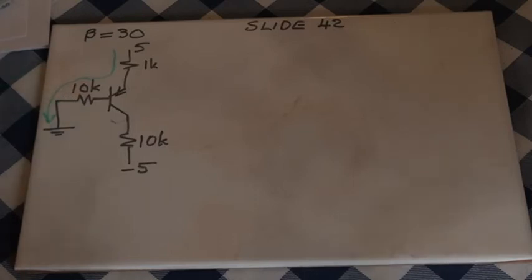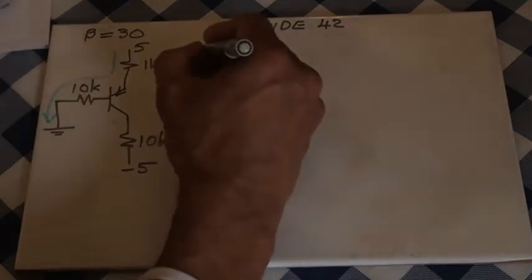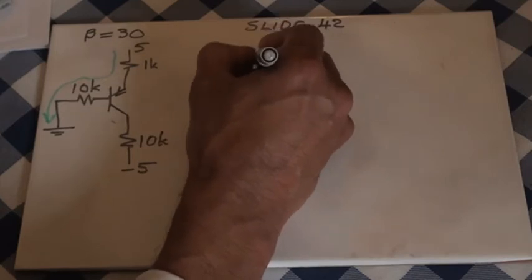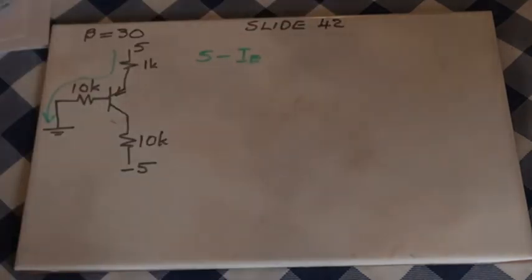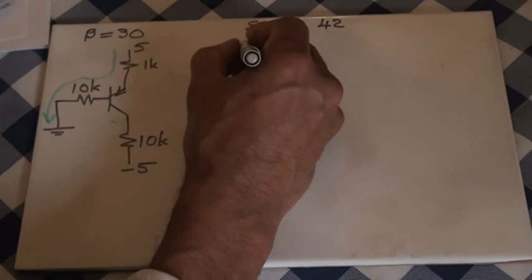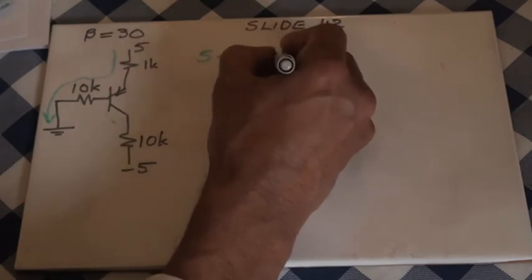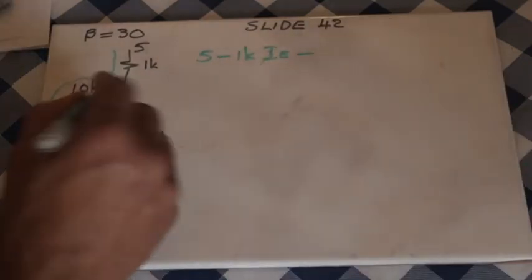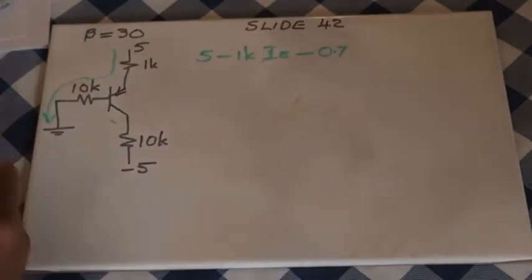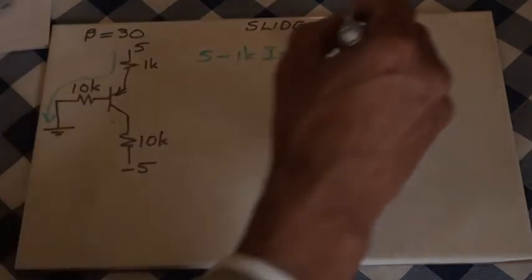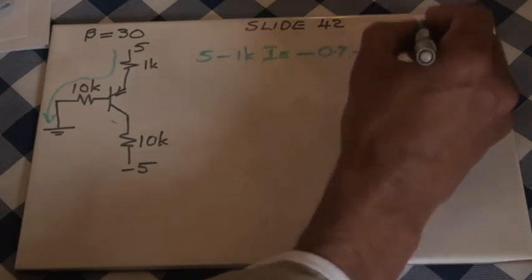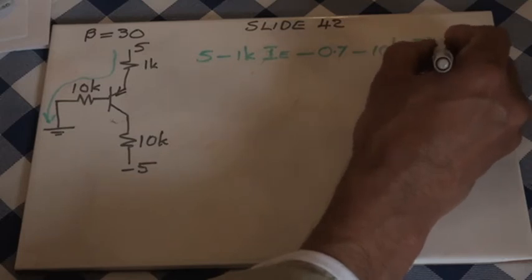So writing the KVL expression: 5 minus 1k times IE minus VBE 0.7 minus 10k IB equals zero. We have IE and IB, but we know they are related.